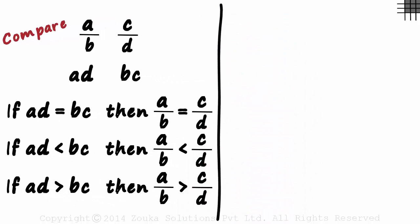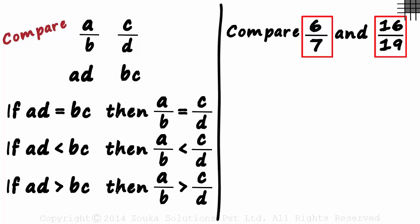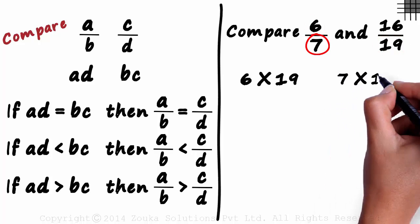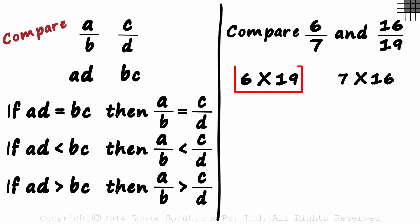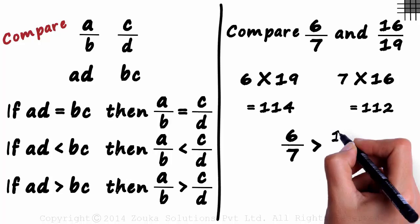So let's say we have to compare 6 by 7 with 16 by 19. Instead of trying to make the denominator same, all we really need to do is compare the product of 6 and 19 with the product of 7 and 16. 6 times 19 gives us 114, and 7 times 16 gives us 112. As 114 is greater than 112, we can be sure that 6 by 7 is greater than 16 by 19.